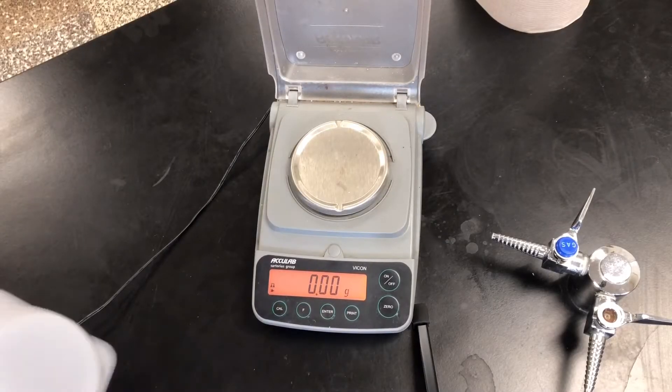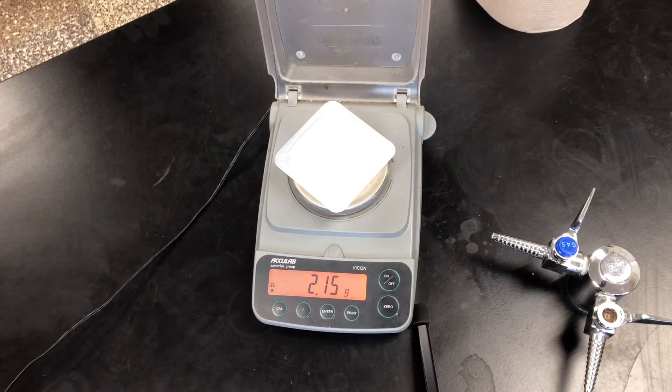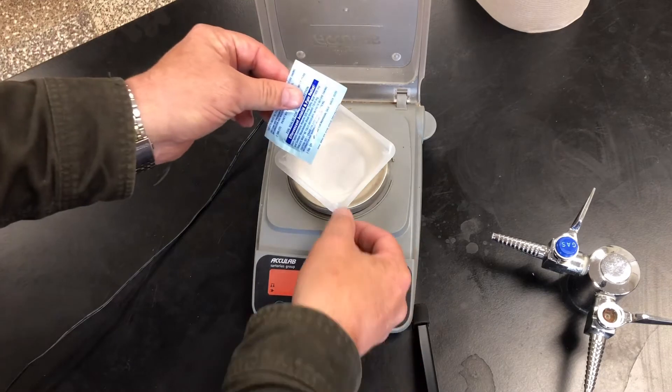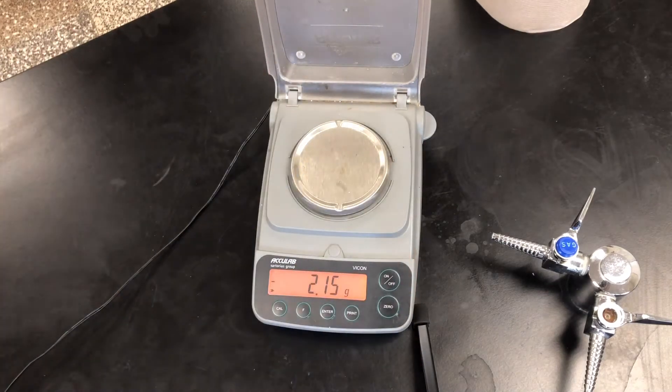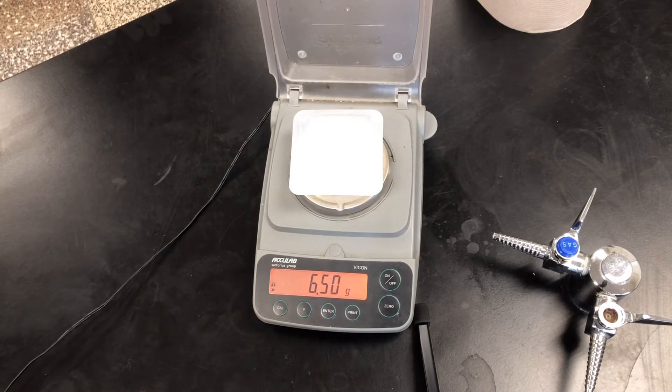Our next step is to get the mass of a weighing boat. We're going to hit zero and then we're going to add our material. Now that we have our material, it is 6.50 grams. So that is the mass of the powder we are going to put into the balloon.